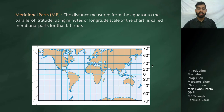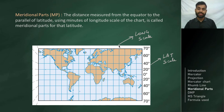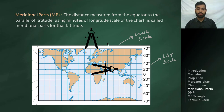Before understanding meridional parts, note that this is the latitude scale of the chart and this is the longitude scale. The distance measured from the equator to a parallel of latitude, using the minutes of the longitude scale of the chart, is called meridional parts for that latitude. For example, for 40 degrees north latitude, it is the distance measured from the equator to that parallel, measured along the longitude scale of the chart.